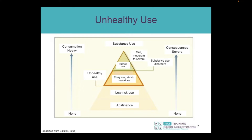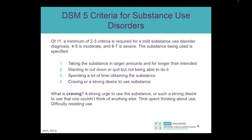Low-risk use is more easily defined for alcohol, where certain consumption levels substantially increase risk, but it can apply to other drugs as well. For example, infrequent cannabis use may be low risk, but at greater frequency and amounts it may cross into a threshold of unhealthy use. The DSM-5 — Diagnostic and Statistical Manual of Mental Disorders, 5th edition — criteria for substance use disorders include 11 criteria. At 2 or 3 criteria it's a mild disorder, 4 to 5 moderate, 6 to 7 severe, and you specify the substance — for example, opioid use disorder, severe.